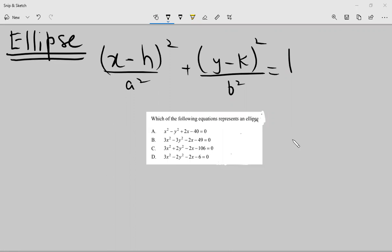If you will see it very critically in all the options a, b, c, d: there's minus y squared in option a, 3y squared in option b, and minus 2y squared in option d.